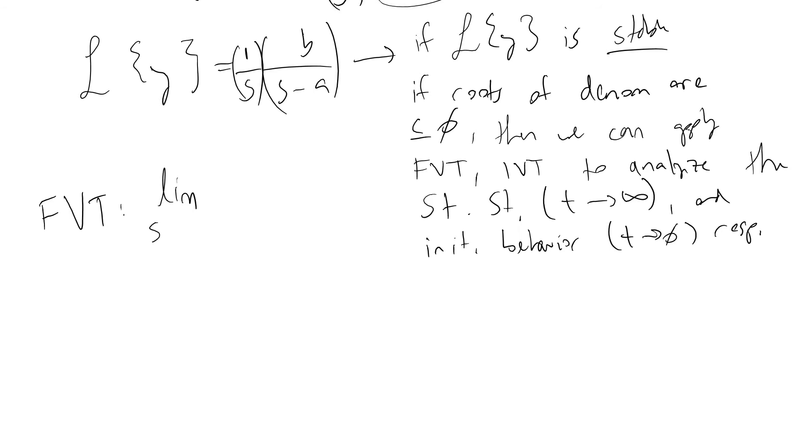So limit as s approaches 0 of s times y of s and y of s is equivalent to the Laplace transform of y tells us how our system, or how our output, what our output will be at the new steady state after we've applied a step function perturbation to our system.